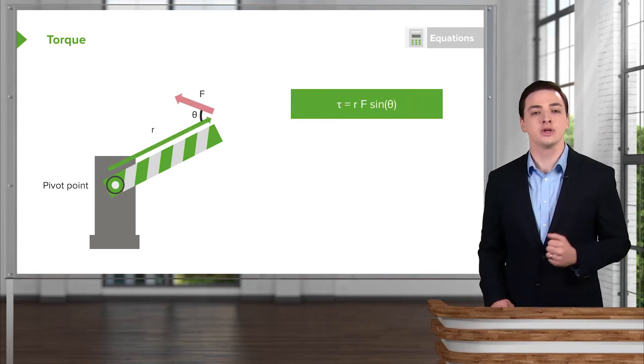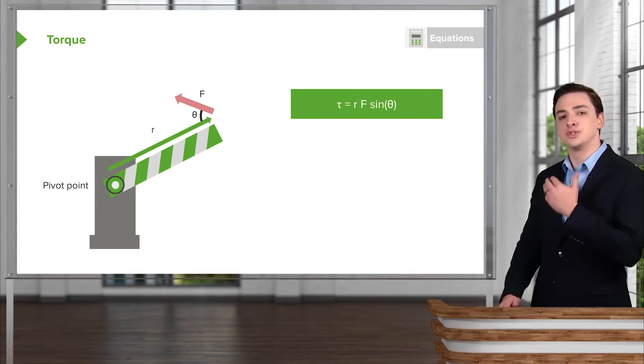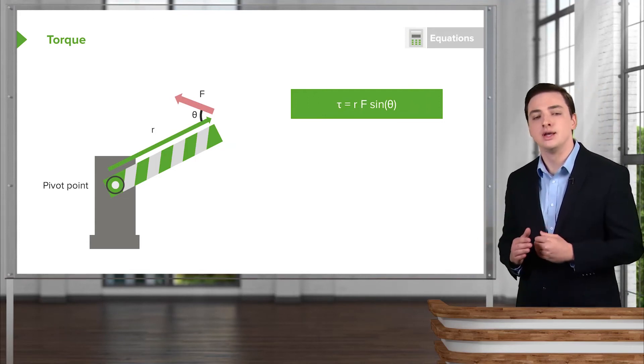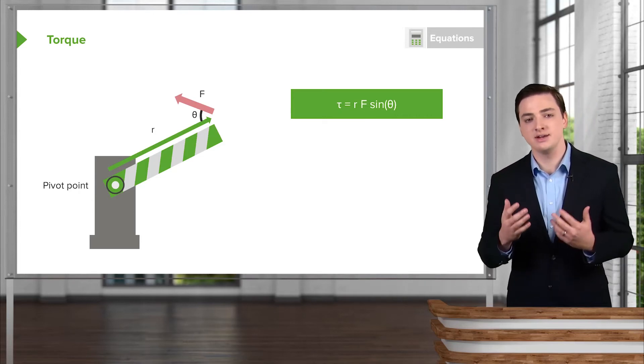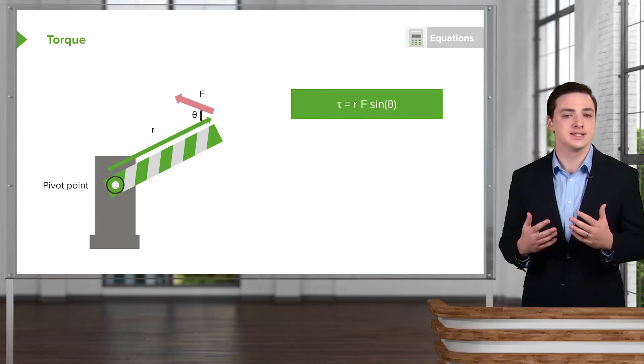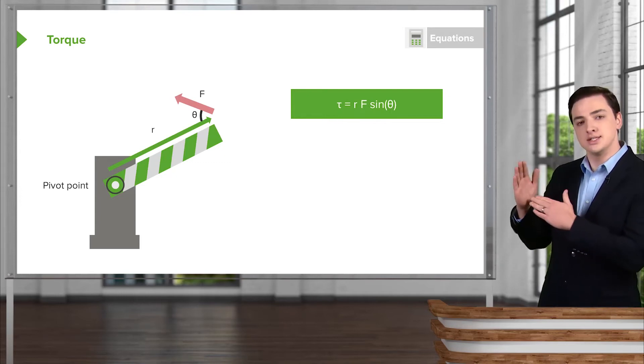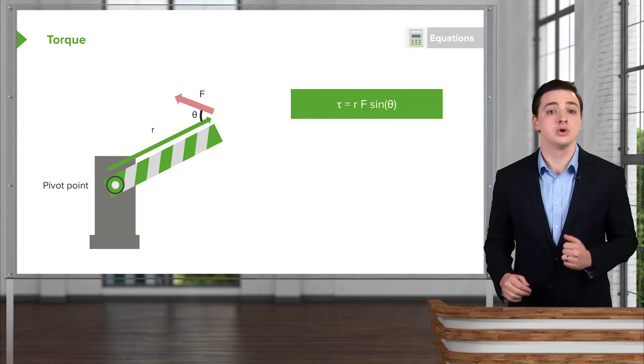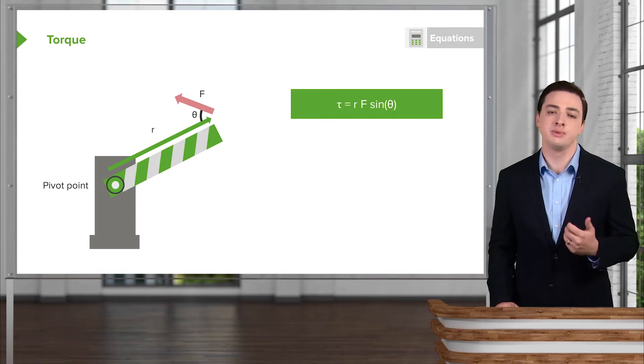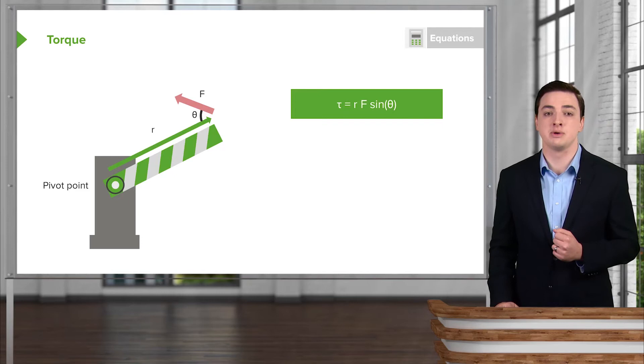So the full torque equation instead looks like this. The torque equals the distance away from my pivot point times the force I apply, but then times the sine of theta. And the sine of theta is just a way of telling us that if the force and the distance away from the pivot point are perpendicular, then we get the full torque, whereas if I'm applying the force inwards or towards my radius, towards the distance away from my pivot point, we have a reduced torque.